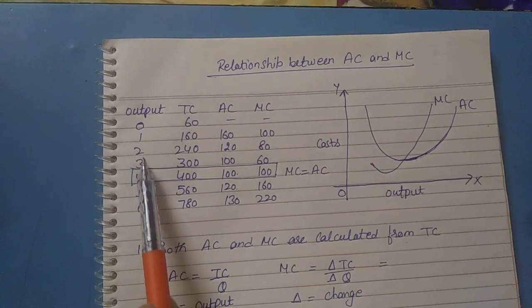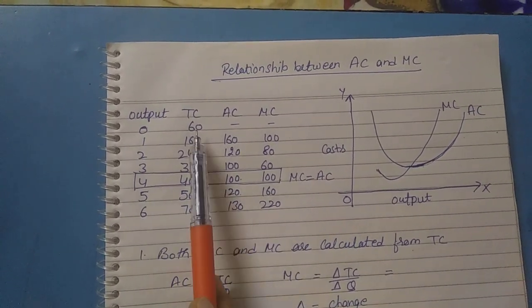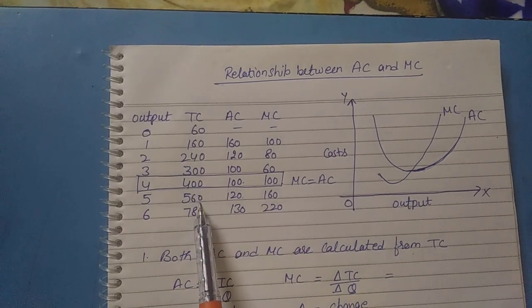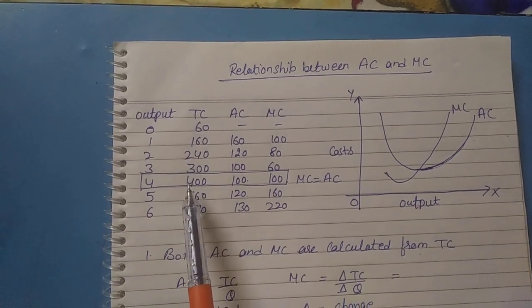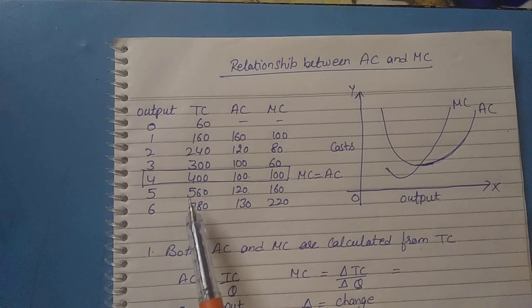Output goes from 0, 1, 2, 3, 4, 5, 6, and total cost is increasing because total cost includes total fixed cost and total variable cost.